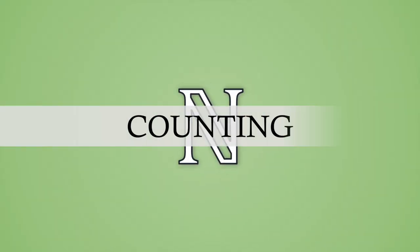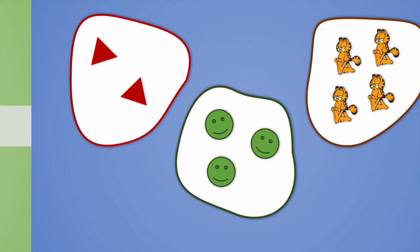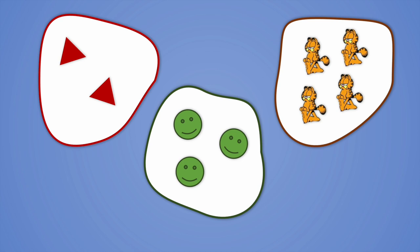Natural numbers appear from the origins of mankind, based on the activity of counting. As an example, we can easily say that here we have sets with some quantities of elements, and if we count each one by one, we can ensure that there are 2 triangles, 3 smileys, and 4 Garfields.